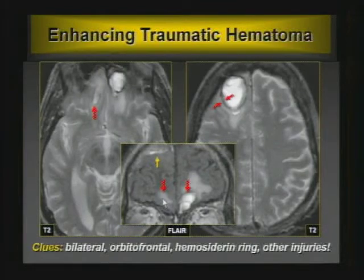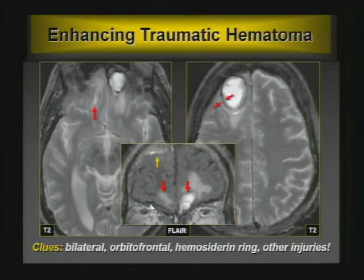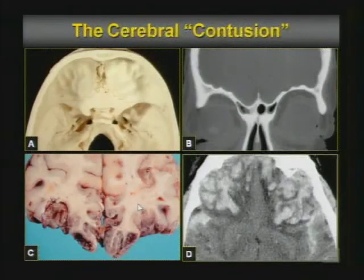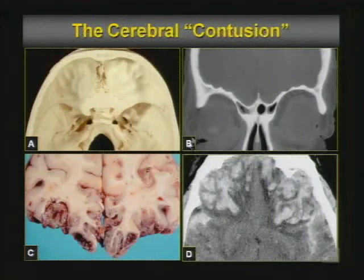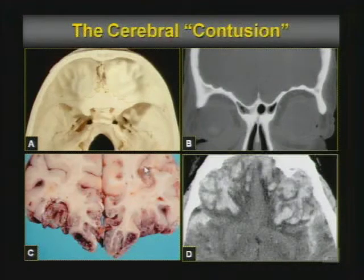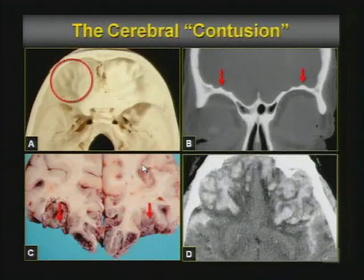A ring-enhancing lesion, whether on boards or in real life, yes it could be a metastasis or primary brain tumor — but think about subacute trauma, where there's enhancement due to breakdown of the blood-brain barrier. The contusion, in distinction to the hematoma, is a bruise of the brain surface due to intrinsically rough areas of the skull. When the brain accelerates and decelerates across those irregular surfaces, it bruises the gyral crest. They can become confluent and form a hematoma. MR is far better than CT because of beam-hardening artifact.